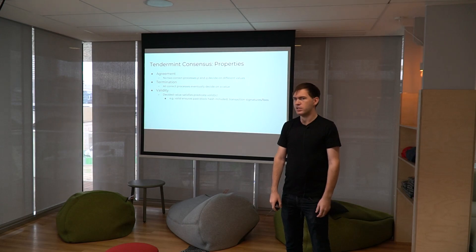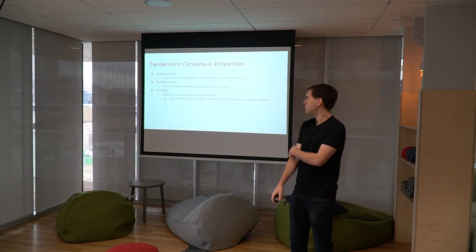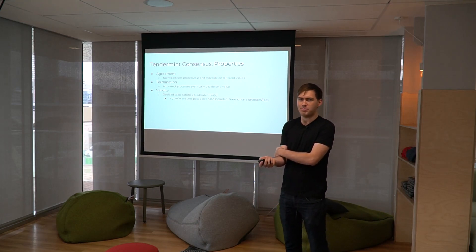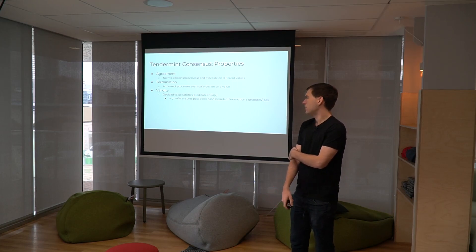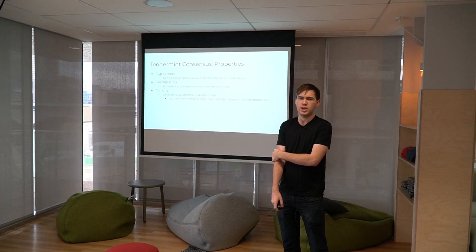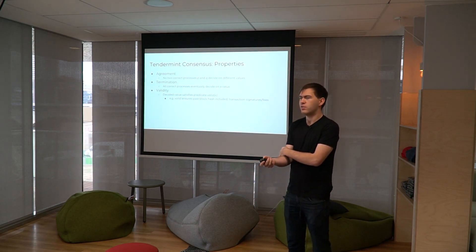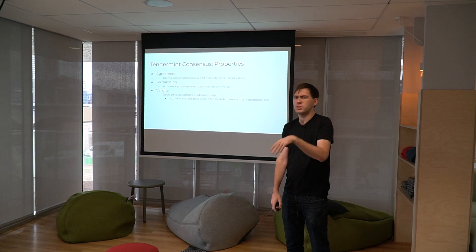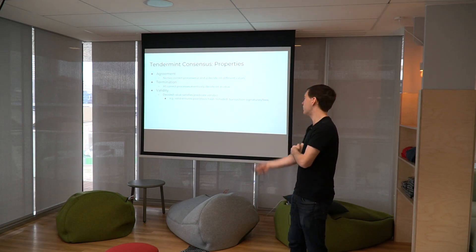We also assume, as in PBFT and DLS, that we are using public key cryptography between all validators, so no messages can be forged. Given that, Tendermint guarantees three things: agreement — no two correct processes P and Q will decide on different values; termination — all correct processes will eventually decide on a value; and validity — some arbitrary predicate function called valid which maps a value (like a block) to a boolean. In our Go implementation, this valid predicate checks that the block includes the hash of the previous finalized block, that transactions have appropriate signatures and fees, and that the header includes the hash of the next validator set.